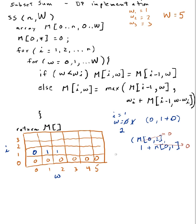w goes to 3. 3 is not less than 1, so I assign m[1][3] as the max of m[0][3], which is 0, or w sub 1 which is 1 plus m[0][3 minus 1] which is m[0][2]. m[0][2] is 0, so it's 1 plus 0. Max between 0 and 1 is 1.